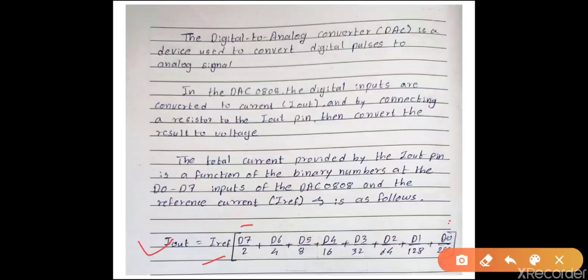The output current depends upon I_reference and the D0 to D7 input pins. For example, if I_reference is 2 milliampere and D0 to D7 pins are all high (all 1s), then you get I_out equal to 1.99 milliampere. Remember, this is the maximum current output of 1.99 milliampere when I_reference is 2 milliampere.